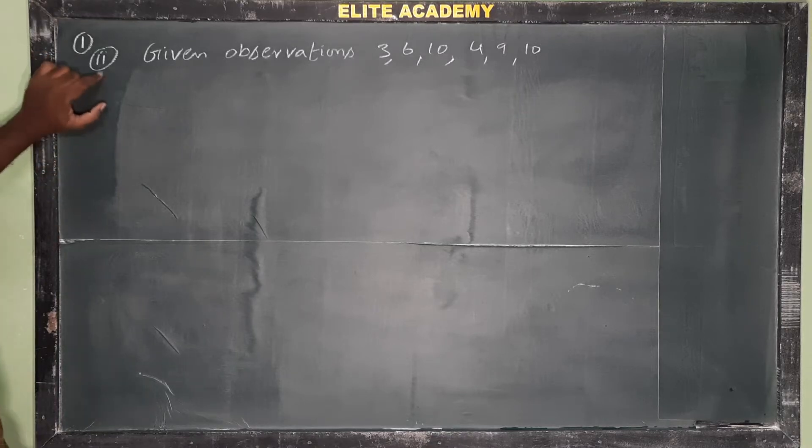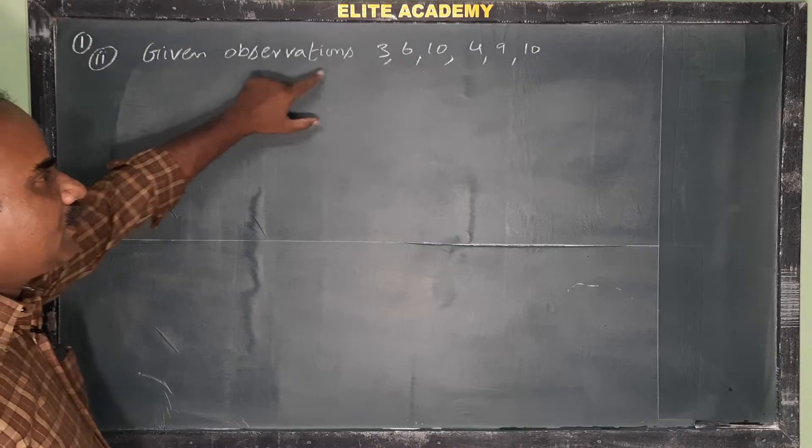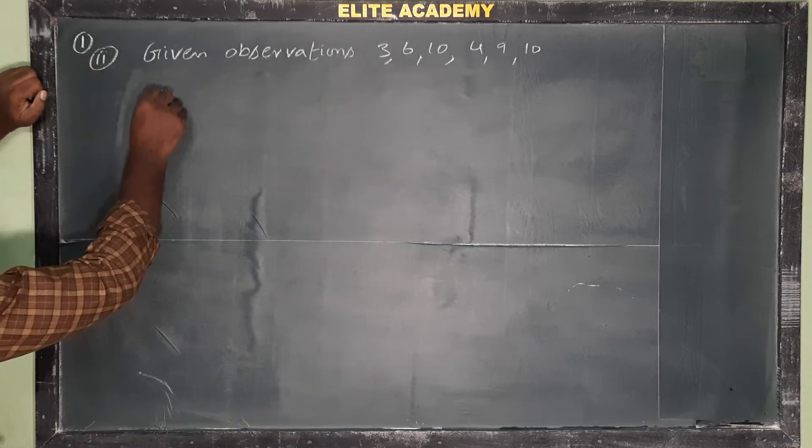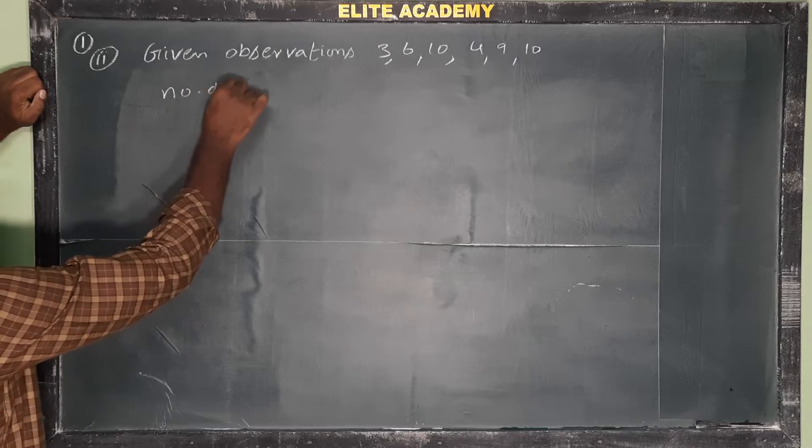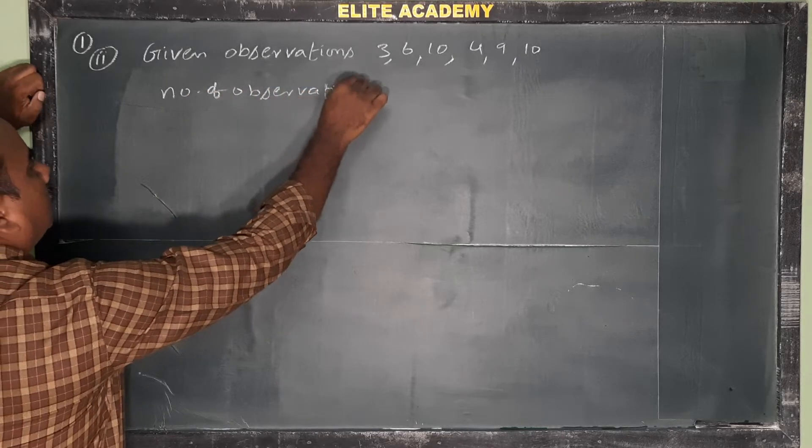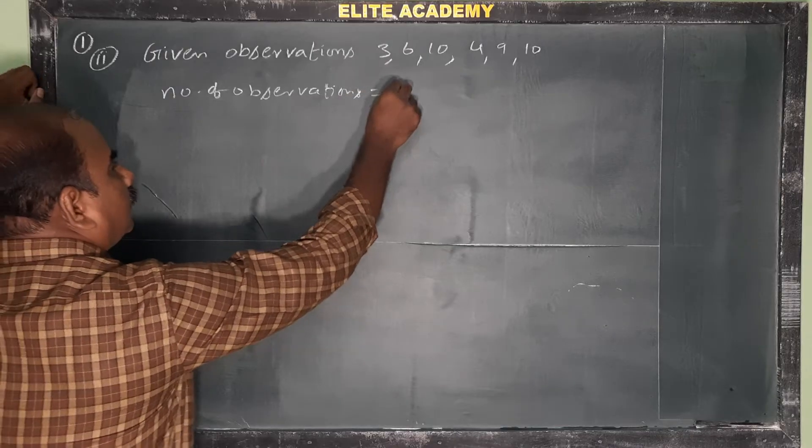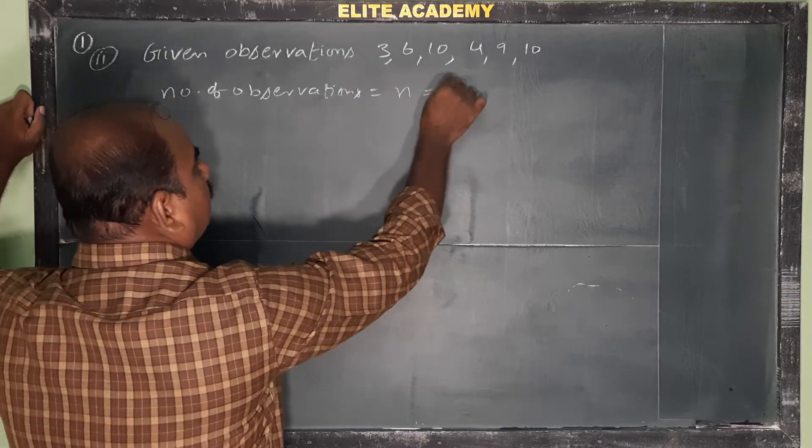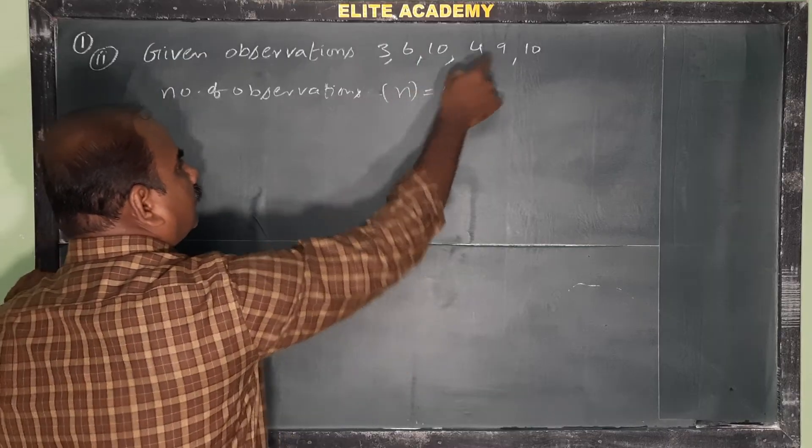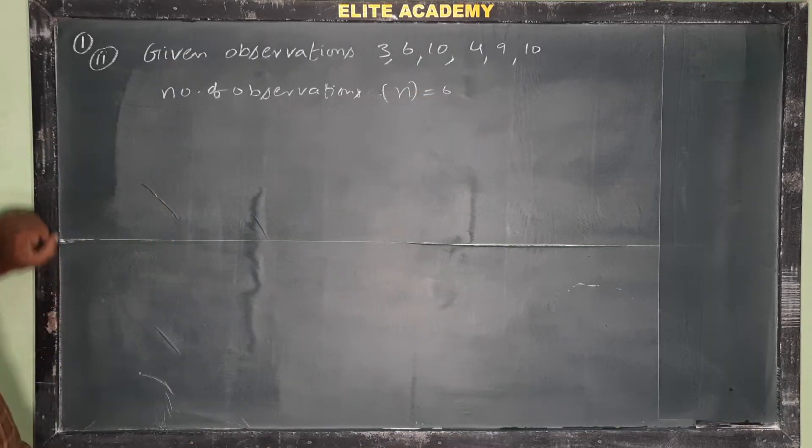Okay, first question. Given observations: 3, 6, 10, 4, 9, 10. So number of observations n is equal to 6. Number of observations 1, 2, 3, 4, 5, 6 - six observations.